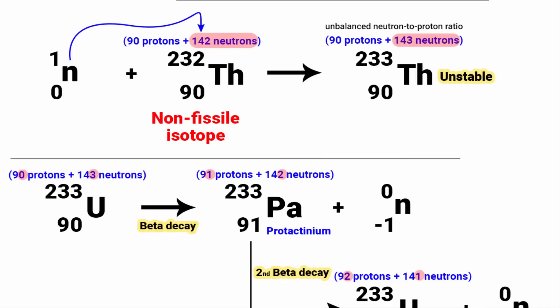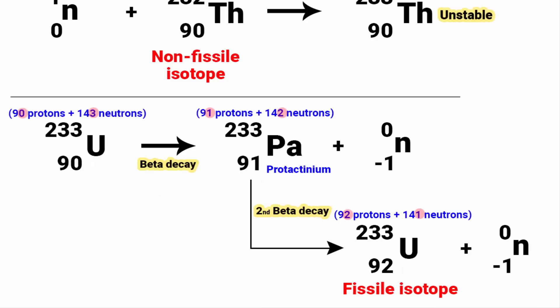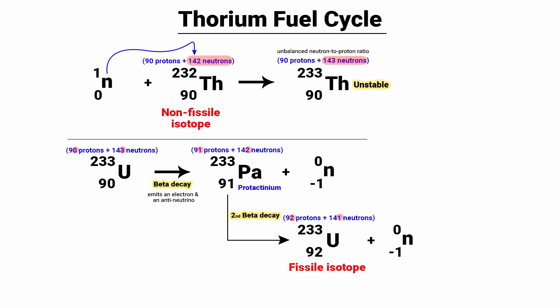Here is how it happens. Thorium-232 is naturally present in abundance. It captures the neutron in a nuclear reactor. This neutron capture by thorium-232 creates unstable thorium-233. Thorium-233 then undergoes beta decay and transforms into protactinium-233. Protactinium-233 again further undergoes another beta decay, becoming the fissile isotope uranium-233. So this is the process of using thorium fuel rods in a separate dedicated thermal reactor to generate heat by capturing a neutron and undergoing two beta decays, ultimately transforming into uranium-233, which is a highly fissile isotope.